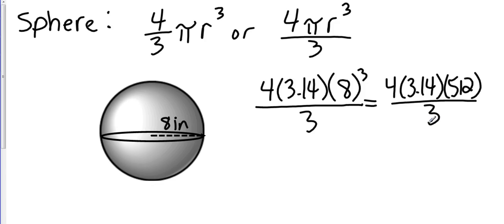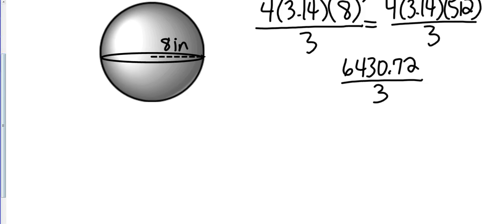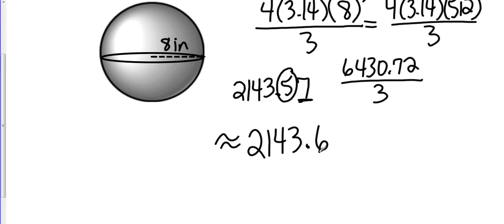Let's take that. That gives me 6430.72, all divided by 3. Scroll down just a bit. And so I come up with 2,143.57. Okay, here's the number I'm going to round to. That 7 tells me to go up, so that's going to be approximately 2,143.6 inches cubed.